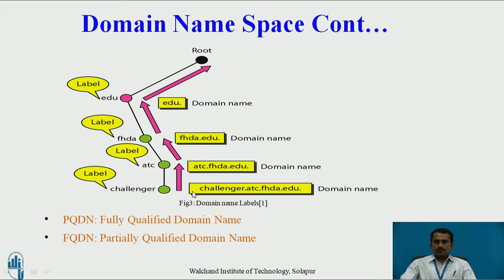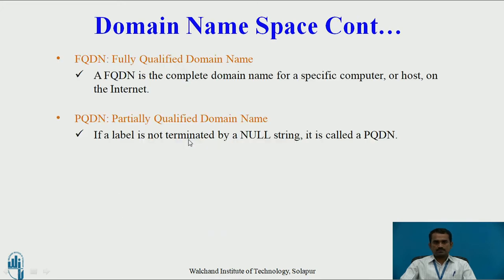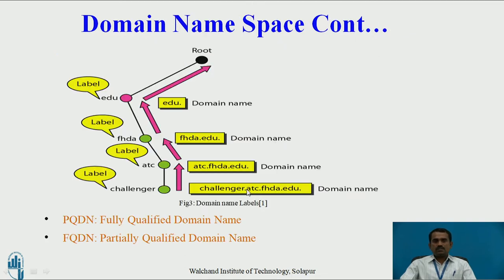Now let us see FQDN. A fully qualified domain name is the complete domain name for a specific computer, host, or on the internet. PQDN stands for partially qualified domain name. If a label is not terminated by a null string, it is called PQDN. In this example, challenger.atc.fsda.edu is the fully qualified domain name, while the others are partially qualified domain names.